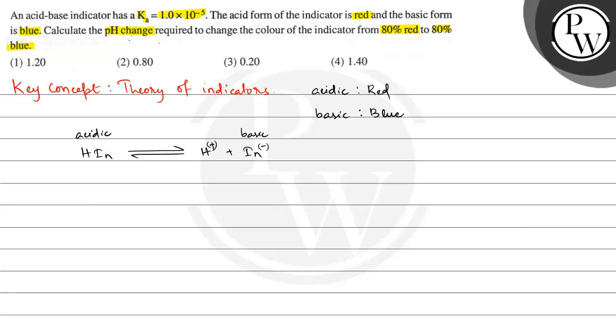Now we have given that the color changes from 80% red to 80% blue. Red is in the acidic medium, that means initially we had 80% acidic and 20% basic. So let the concentration of acidic form be 80, then the concentration of basic form will be 20.